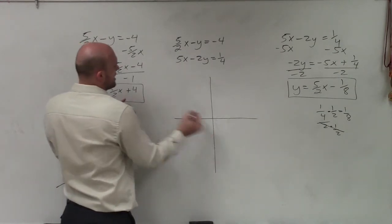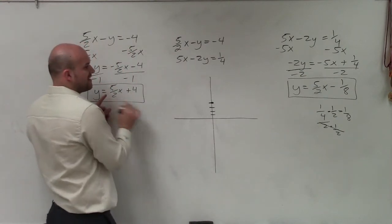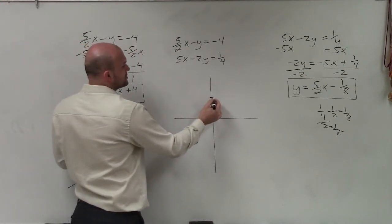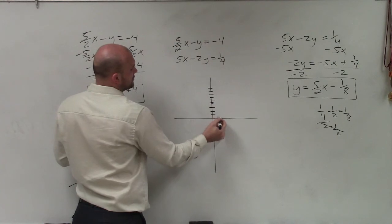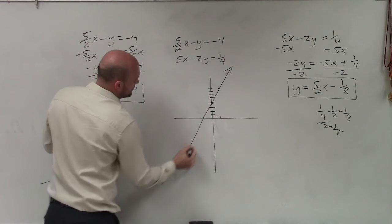So the first one, we always start at our y-intercept, which is at positive 4. 1, 2, 3, 4. And then we're going to follow the slope, which is 5 halves. So I'm going to go up 5 more: 1, 2, 3, 4, 5 over 2. And all I need is two points to be able to graph what my line will look like.